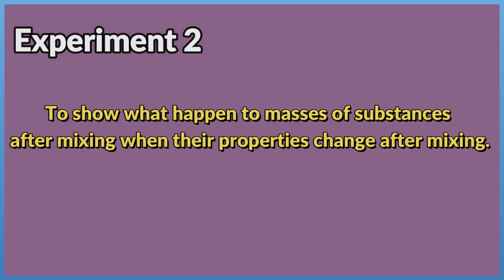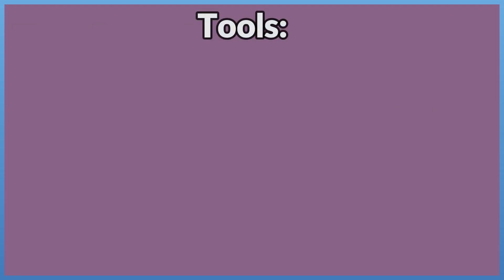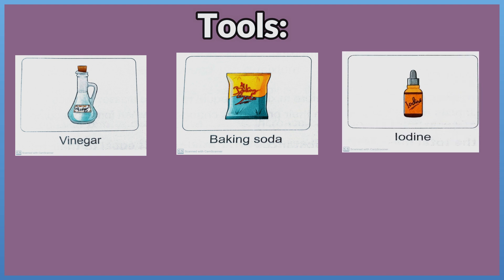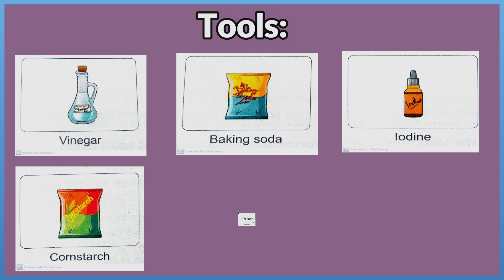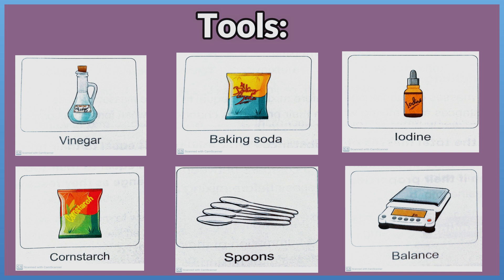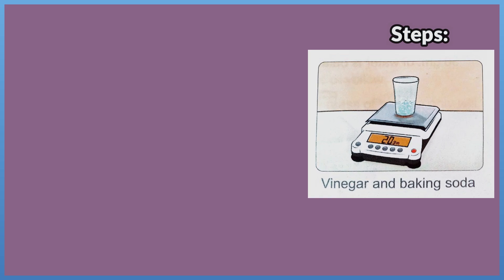Experiment 2: To show what happens to the masses of substances after mixing when their properties change. Tools: vinegar, baking soda, iodine, cornstarch, spoons, and balance. Steps: 1. Weigh 10 gm of vinegar and 10 gm of baking soda using the balance. 2. Mix the vinegar and baking soda together using a spoon, then weigh the masses of them after mixing and compare their masses before and after mixing.